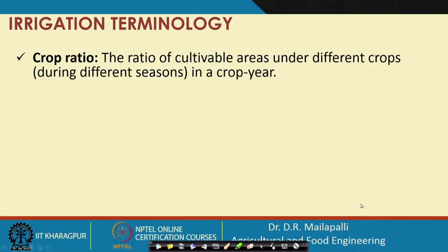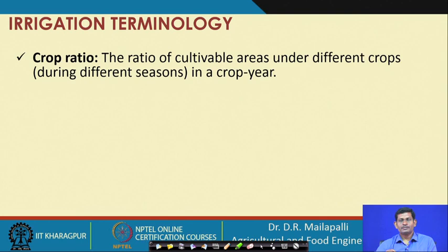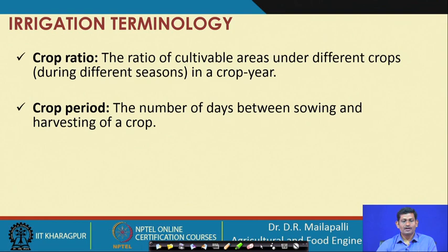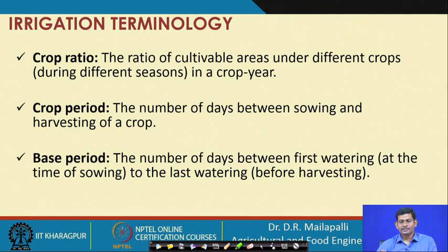Crop ratio is the ratio of cultivable area under different crops during different seasons in a crop year. For example, if you cultivate rice in both Kharif and Rabi seasons, the ratio of cultivated area during Rabi and Kharif gives the crop ratio. Crop period is the number of days between sowing and harvesting. Base period is the period from the first watering to the last watering before harvesting.